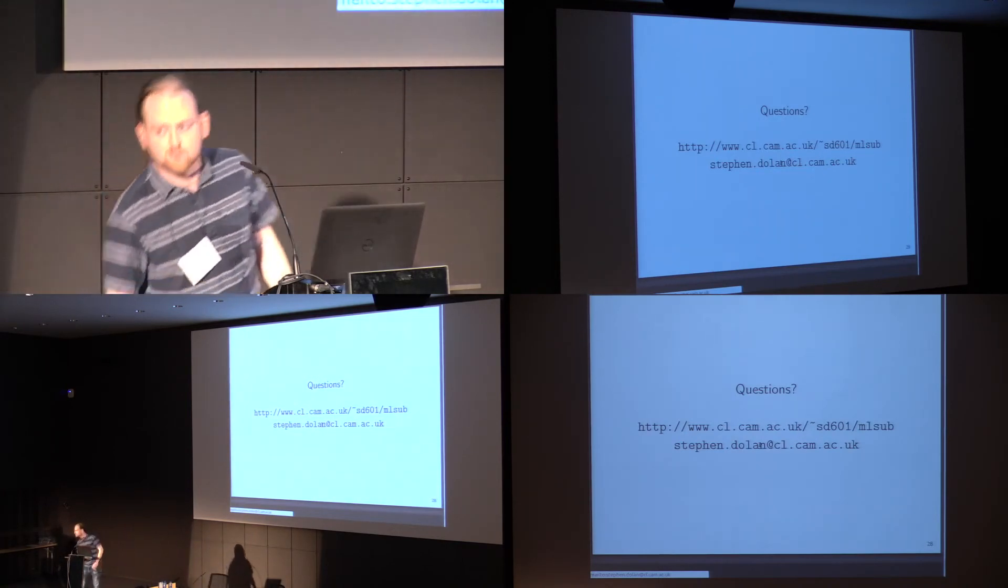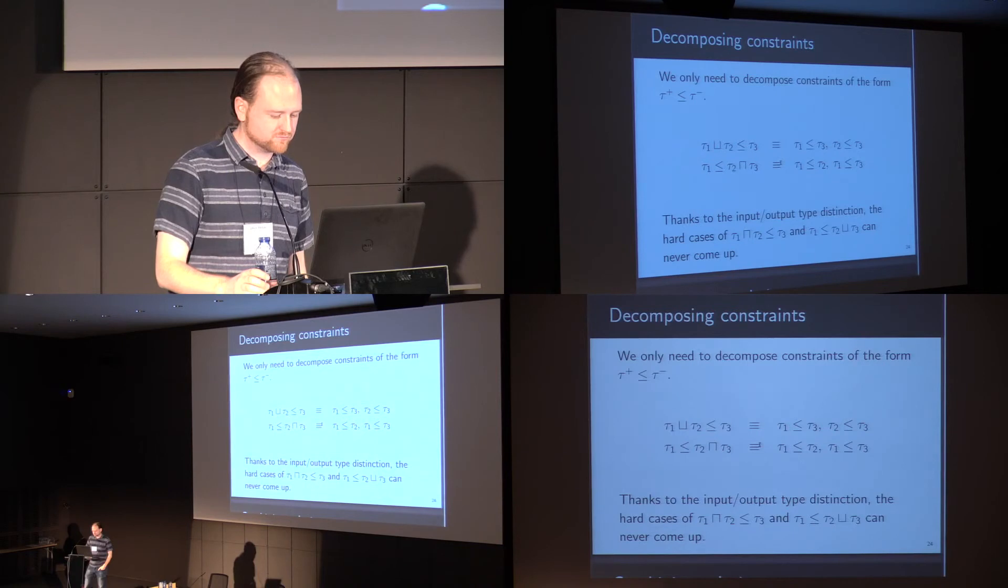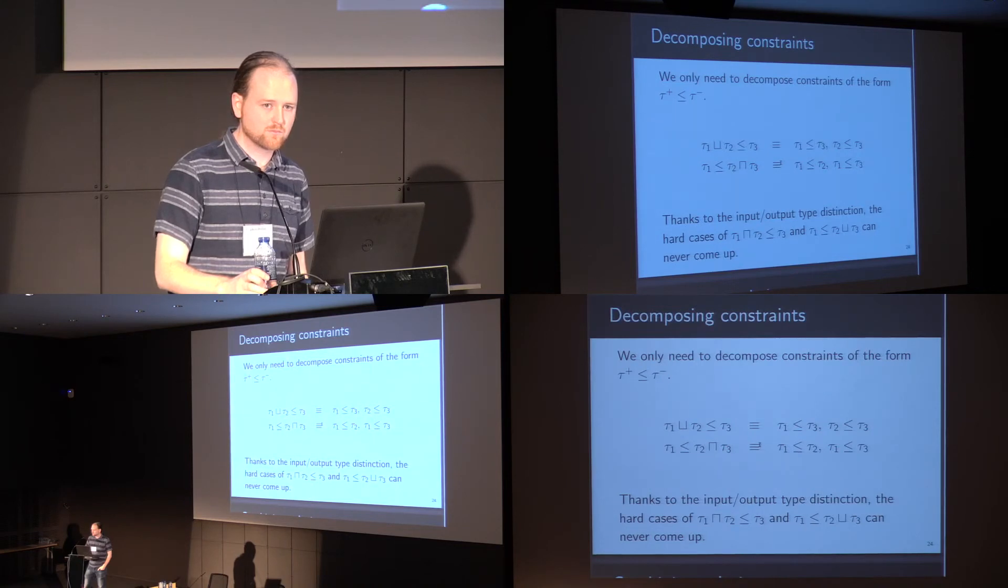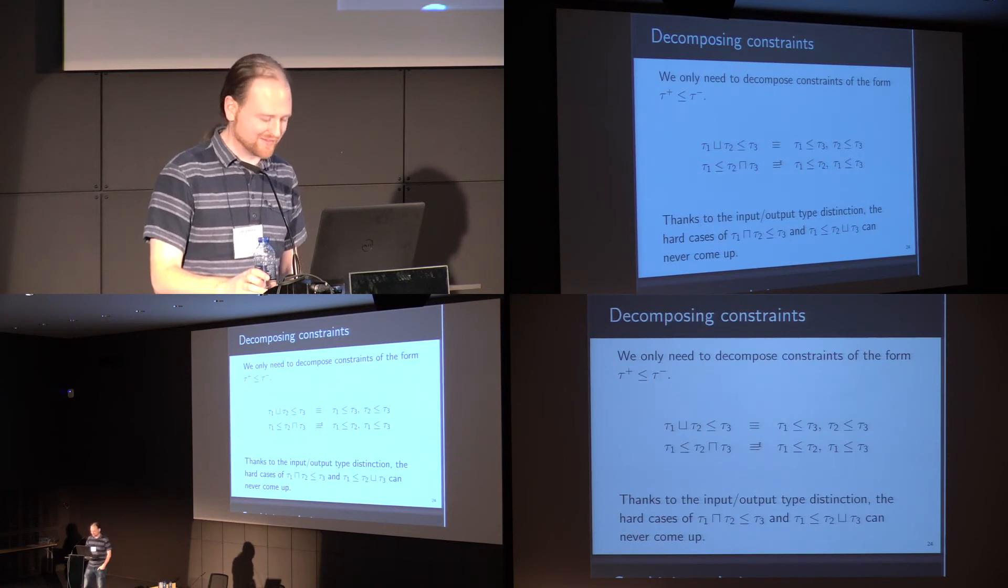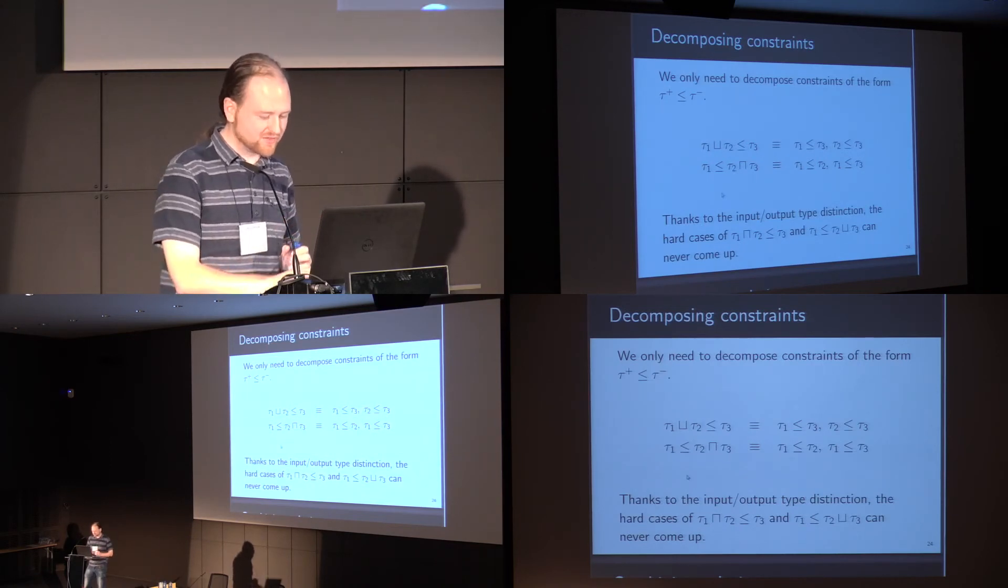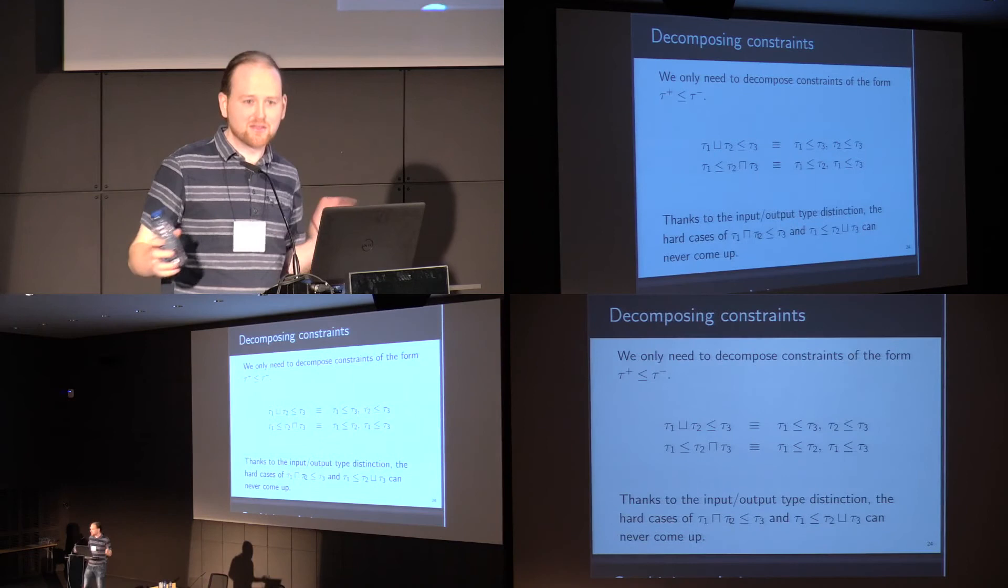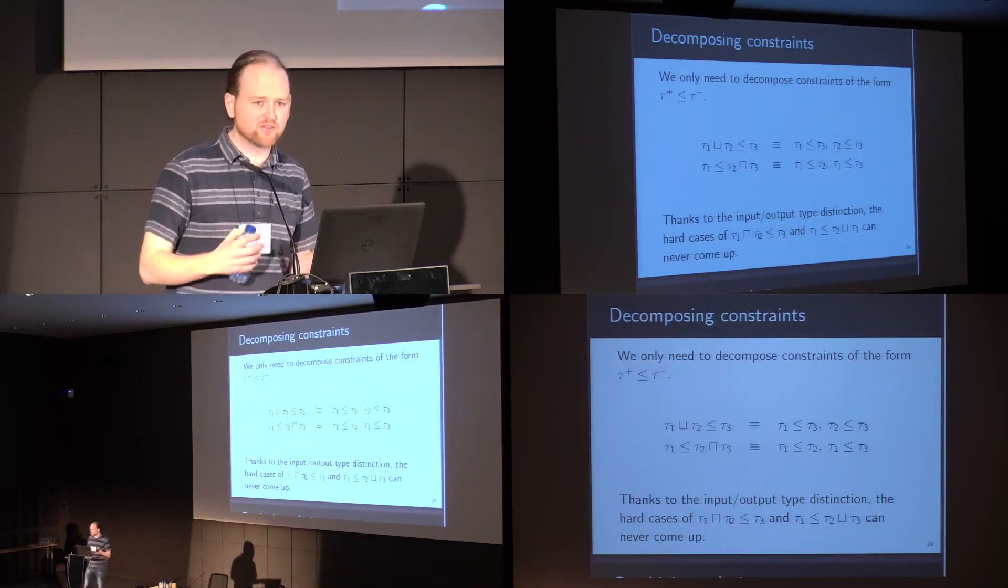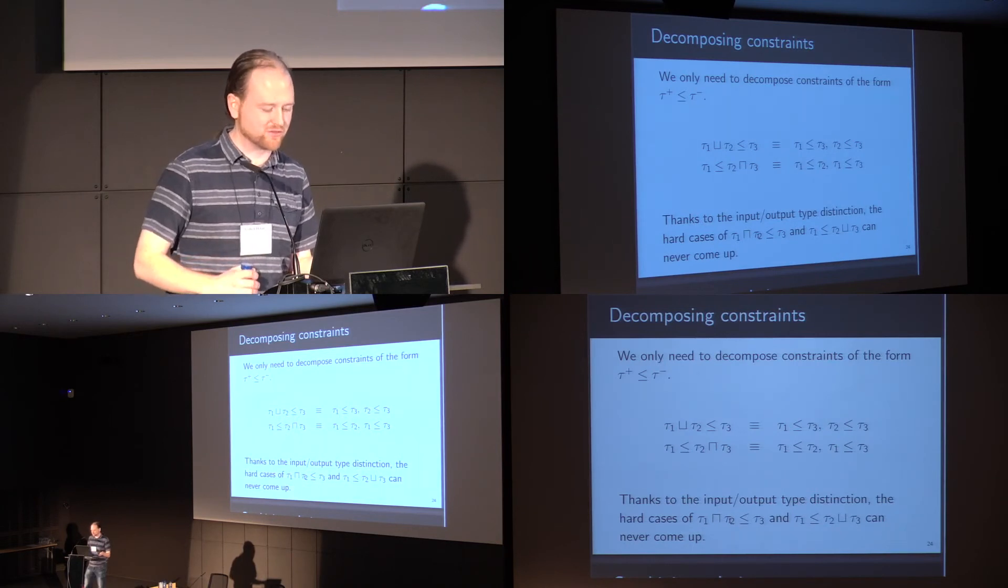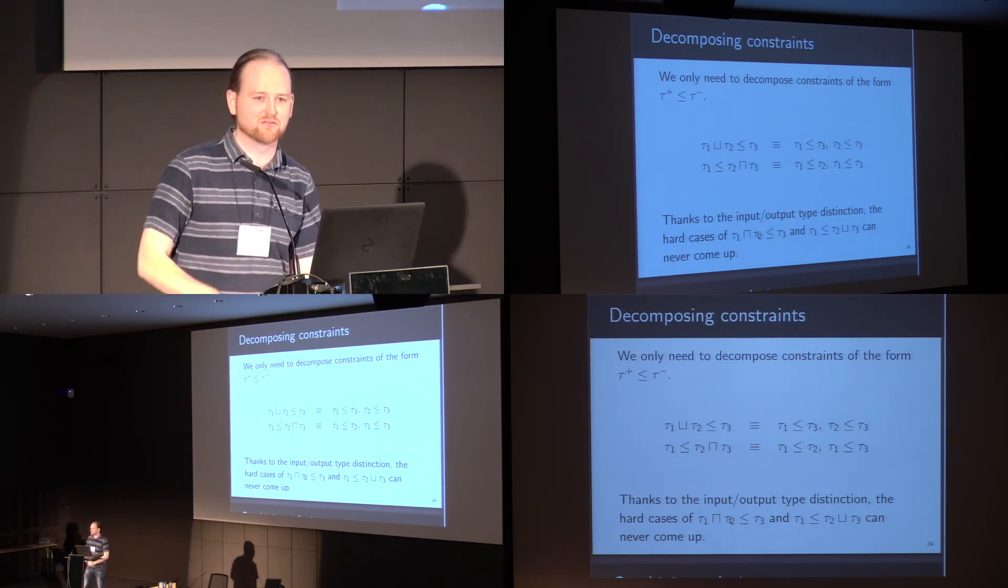[Question] Can you go back to slide 24? Could you explain why you say this is a hard case of tau 1 intersection tau 2 should be a subtype of tau 3? Can't you just require that one of them is a subtype of tau 3? Right, so that is sound but incomplete. If tau 1 is a subtype of tau 3, then it is the case that this holds, and if tau 2 is a subtype of tau 3, then it is the case that this holds. But neither of those need to hold for that result to hold. If you give it as sets and intersection, then the intersection of the even numbers and odd numbers is indeed a subset of a set containing 5, but neither of those two statements holds. Neither the even numbers nor the odd numbers is a subset of that in general.